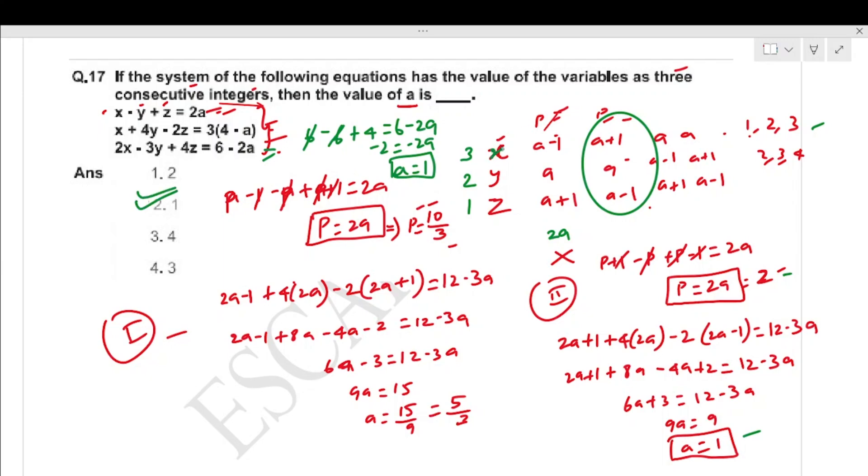Checking: 3 consecutive integers. First option gives 2a. Second equation apply gives a equals 5 by 3, so p is a fraction, not an integer. Second option gives a equals 1, which makes p an integer. Third equation also gives a equals 1.